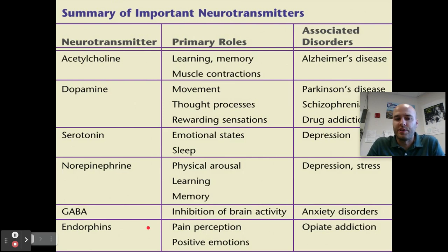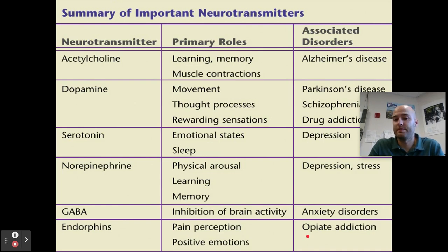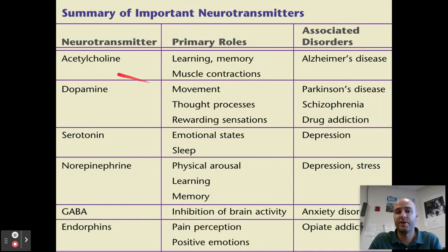Our final neurotransmitter is endorphins, which deal with pain perception and positive emotions. You may be familiar with the runner's high — you're able to run or compete in physical endeavors without feeling pain until you're finished, thanks to endorphins. Something that mimics these endorphins is opiate addiction: heroin, Oxycontin, and narcotics mimic your endorphins and you become addicted because of the positive emotions and pain relief associated with them. These are the major neurotransmitters you need to know; we'll reference back to them as we go forward.